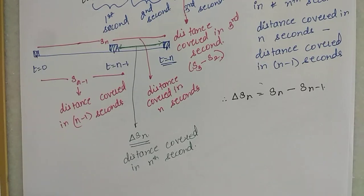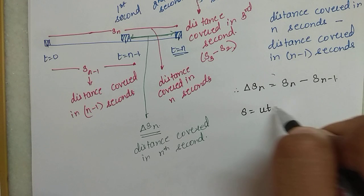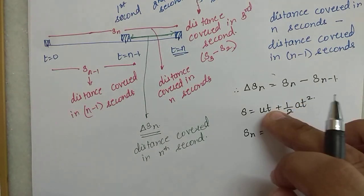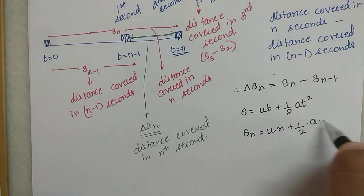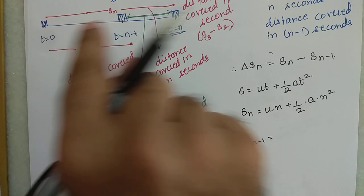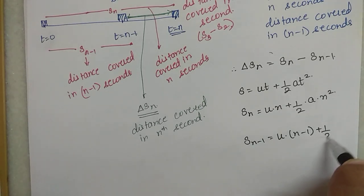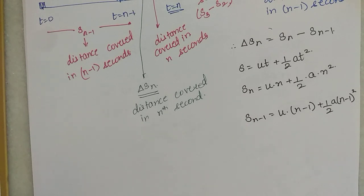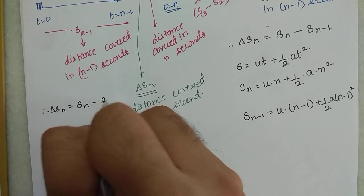Now we find Sn. Since acceleration is constant, we use S = ut + ½at². Distance covered in n seconds: put t = n, so Sn = un + ½an². Distance covered in n-1 seconds: put t = n-1, so S(n-1) = u(n-1) + ½a(n-1)². Now ΔSn = Sn minus S(n-1).